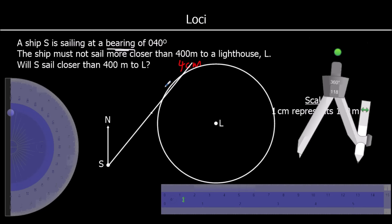If it was more than 400 meters, it would stay outside the circle, because the circle is all of the points 400 meters away from the lighthouse. So will it? It will.